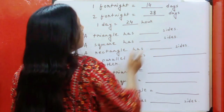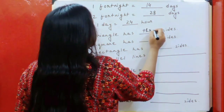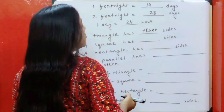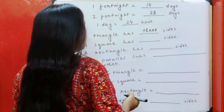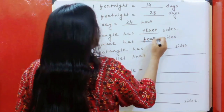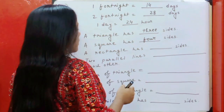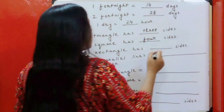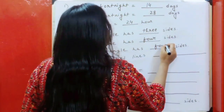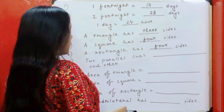A triangle has three sides. A square has four sides. A rectangle has four sides.